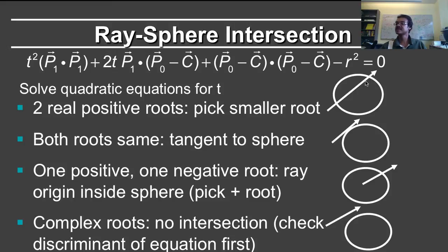If you have two positive roots, it means the ray intersects the sphere like this. And in that case, you pick the smaller positive root. If both roots are the same, that means the ray intersects the sphere only once, which means it's tangent to the sphere. If you have one positive and one negative root, that means you're inside the sphere. So the negative part is this intersection, the positive part is here.